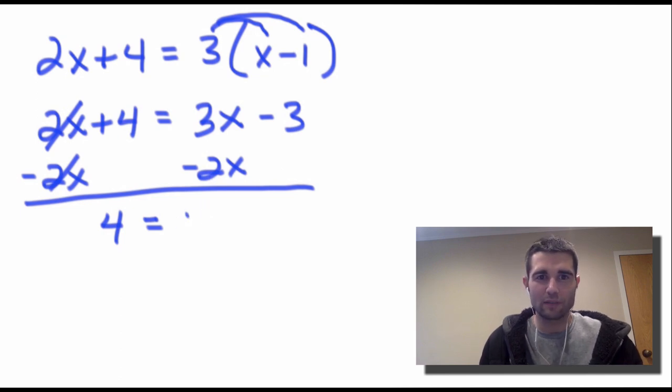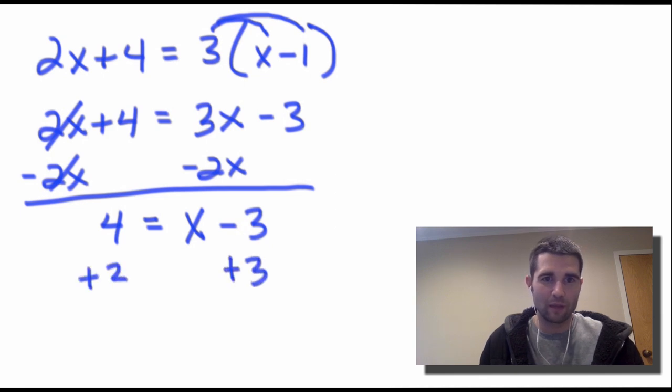And whenever we have 1, we don't necessarily need to write it. It's assumed that it's in front of that x. And we have minus 3. The last thing to do here is simply to add 3 on both sides. When we do that, we'll cancel out here. And we're finally left with 7 is equal to x.